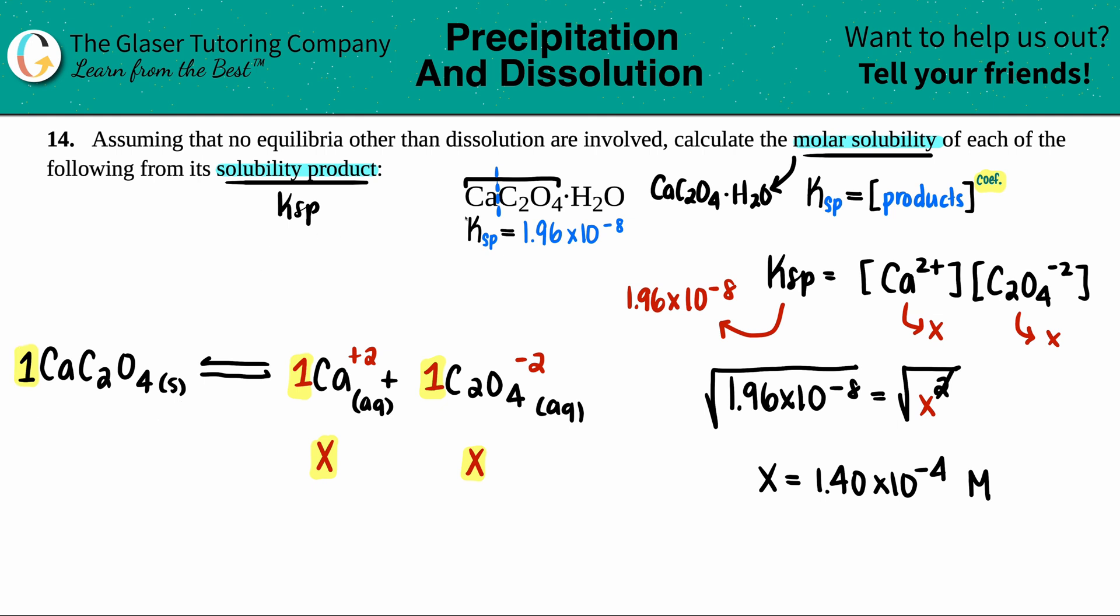And since there was only one of this ionic compound with the whole one hydrate, it's a one-to-one ratio. So they're all equal to each other.